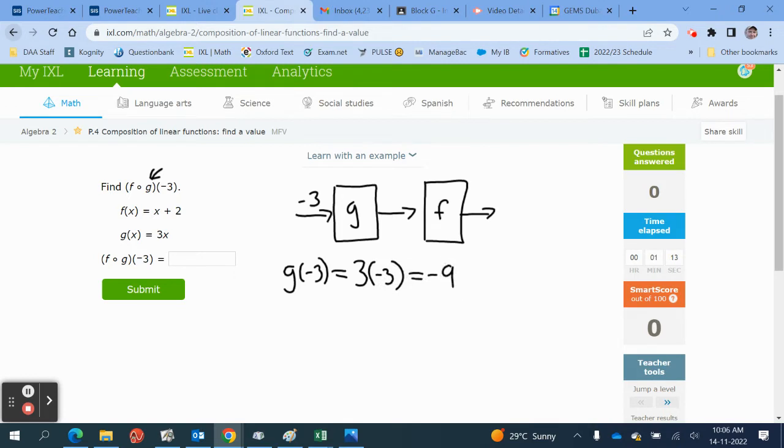We take this result and we insert it into the function f. Into the function f goes minus 9, then. So, f is x plus 2. We've got x plus 2. We insert minus 9. Minus 9 plus 2 is going to give us minus 7.